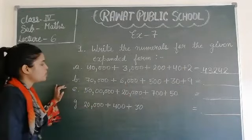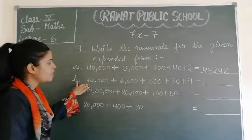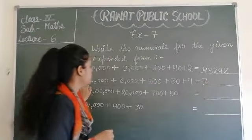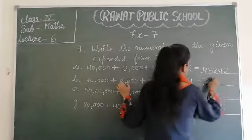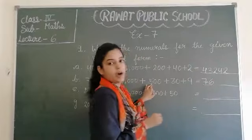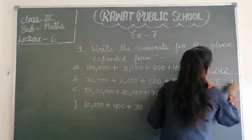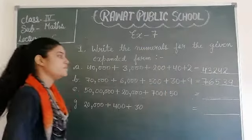Next question number B. Seventy thousand. Seventy thousand ka seven. We write seven. Six. Five. Three. And nine. Seventy six thousand five hundred thirty nine.